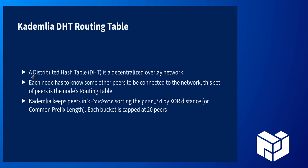Kademlia is a distributed hash table, which is basically a decentralized overlay network in which there is no central peer. Each node has to know at least some of the other peers participating in the network just to be connected, and this set of peers is called the routing table. In the Kademlia implementation, all of the peers in the routing table are sorted into what's called k-buckets, defined by the XOR distance between peer IDs. Each bucket is capped at 20 peers.